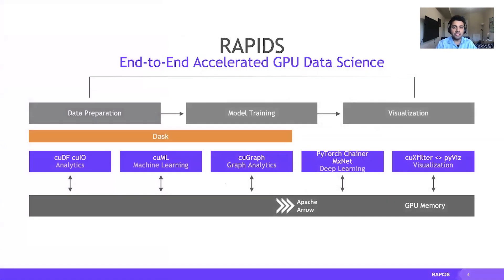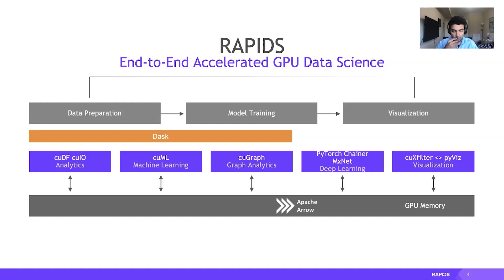RAPIDS is a suite of open source libraries incubated by NVIDIA, which focus on accelerating GPU data science end-to-end. We provide equivalence with a lot of data ecosystems — for Pandas we have cuDF, which is data frames accelerated on GPUs following a similar API. We have cuML, which is the scikit-learn equivalent on GPUs. We play very nicely with deep learning frameworks, and we scale out using Dask.